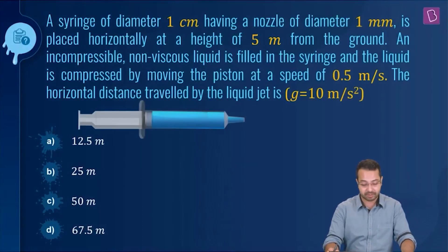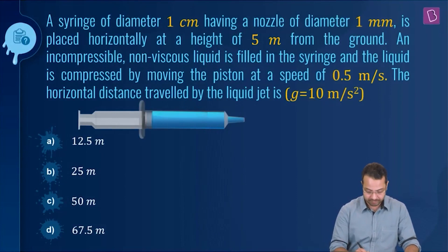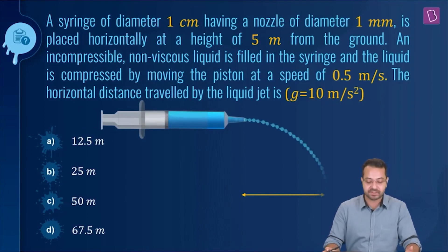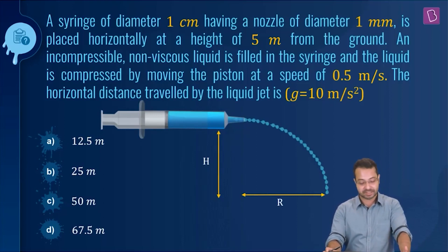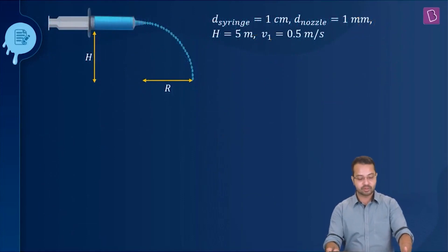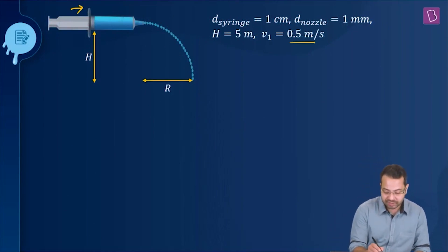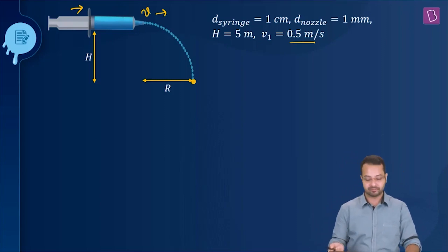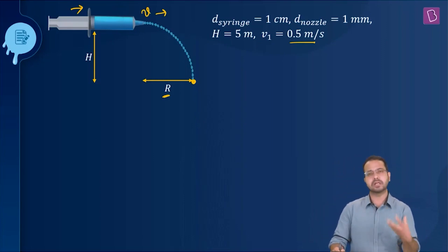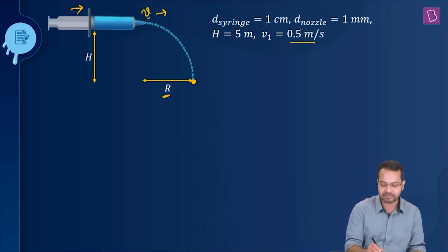A syringe of diameter 1 cm having a nozzle of diameter 1 mm is placed horizontally at a height of 5 m from the ground. An incompressible non-viscous liquid fills the syringe and is compressed by moving the piston at 0.5 m/s. We need to find the horizontal distance travelled by the liquid jet. The objective is to first find the exit velocity at the nozzle using kinematics.